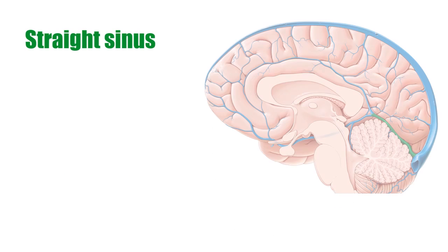When seen from its cross-section, the straight sinus has a triangular shape. The straight sinus, shown in green, receives venous blood mainly from the great cerebral vein.